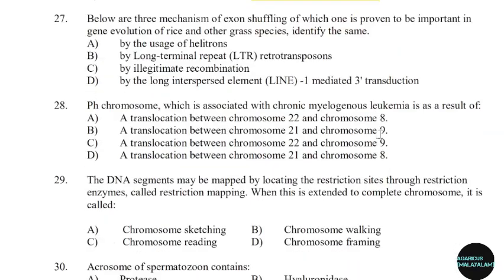27th question: Below are three mechanisms of exon shuffling, of which one is proven to be important in gene evolution of rice and other grass species. Identify the same. Correct answer: Option B — By long terminal repeat retrotransposons.